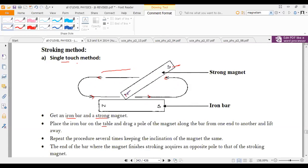If you're using a north pole to strike this iron bar, the point where it's leaving the bar will get a pole which is opposite to the stroking magnet.